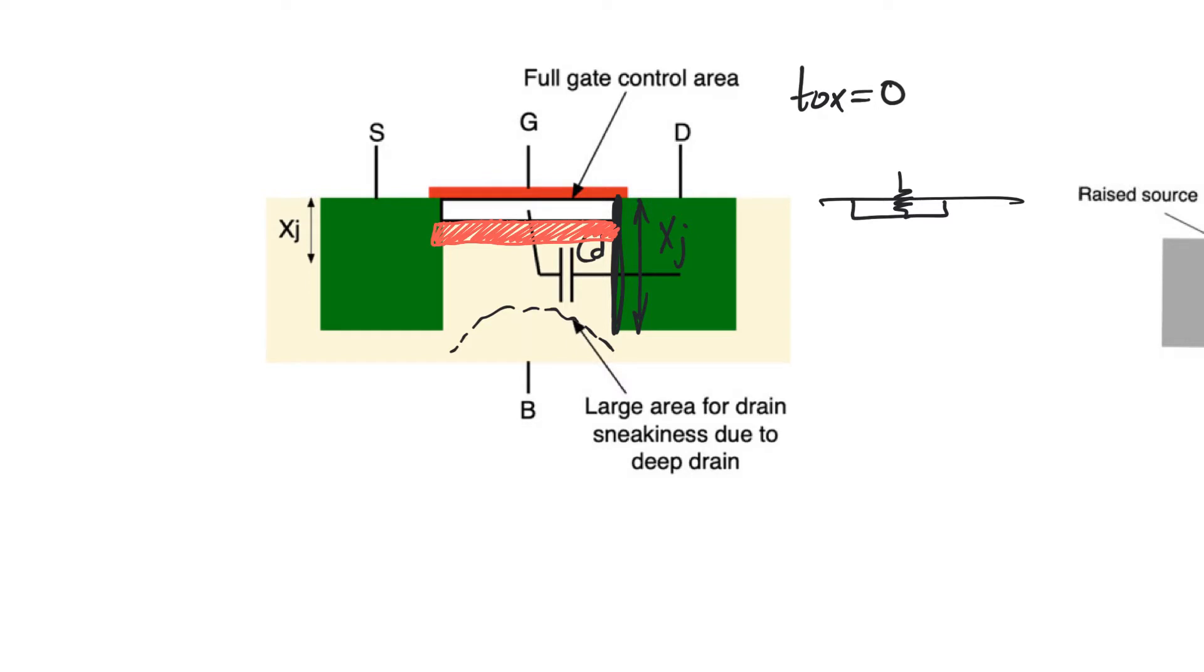This would leave a small area of body around here and this is the body where the channel can form. Now this buried gate is theoretically shorted to the control gate on top so that they both have the same potential. This allows this double gate to have total control over the channel and the drain is now completely isolated from the channel. It has no path to it because in the middle we have the buried gate.